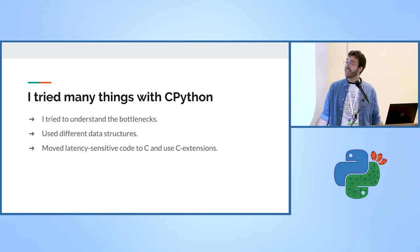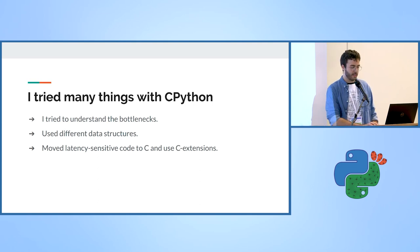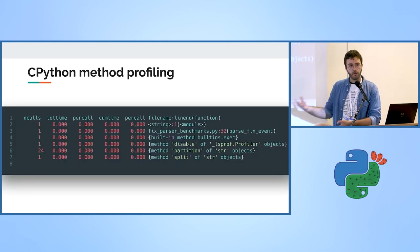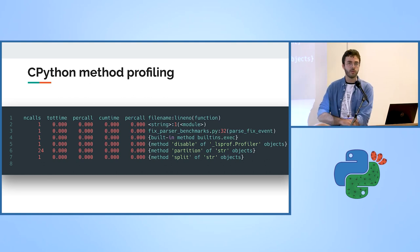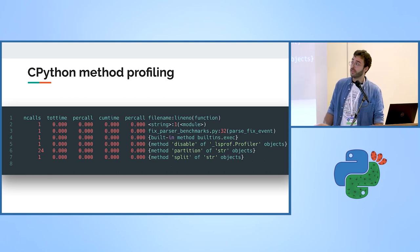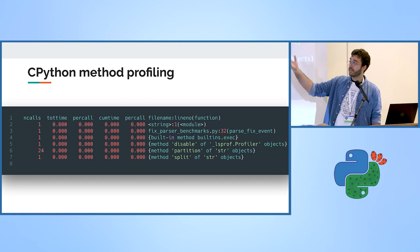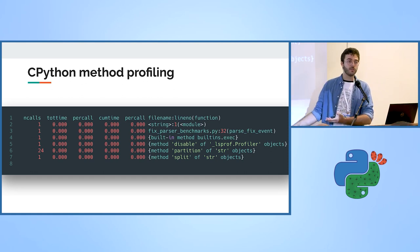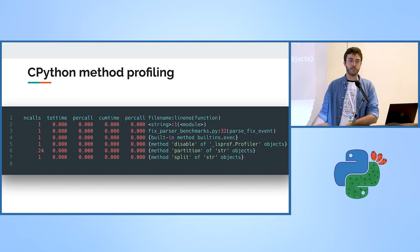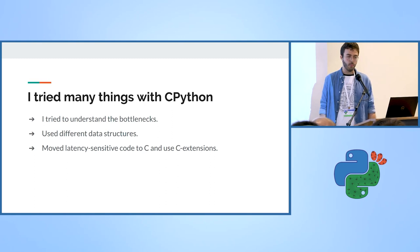I tried many things — I tried to understand the bottlenecks. I used cProfile and started looking at the assembly code, doing some reverse engineering. Here's a small example of the cProfile output for the code I mentioned. As you can see, there's nothing interesting because everything is using CPython methods, so it's useless, at least for now.